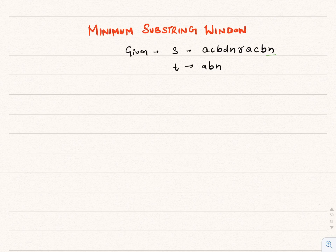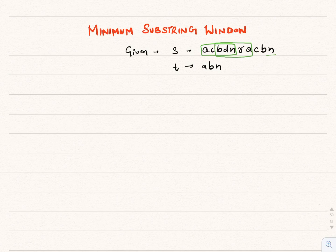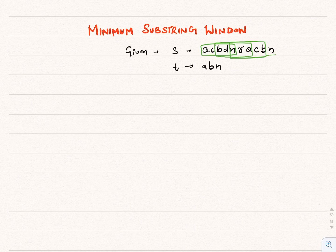As there are different windows in S containing pattern T, we need to find the one with minimum size. In the given example, the different windows containing pattern T have window sizes of 5, 5, 5, and 4.